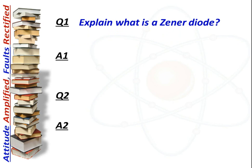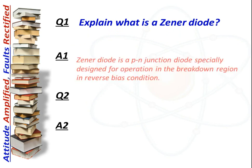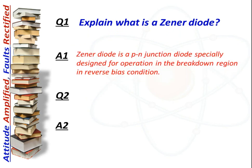Question: What is a zener diode? Answer: A zener diode is a p-n junction diode specially designed for operation in the breakdown region in reverse bias condition.